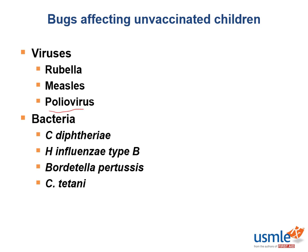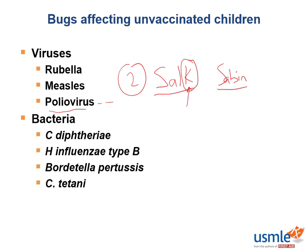What is the vaccine for poliovirus? Remember, there are two vaccines — the Salk and the Sabin vaccines. The Salk vaccine is the killed, or inactivated, vaccine, while the Sabin vaccine is the live attenuated vaccine. The Sabin vaccine provides better immunity, but since it's live and attenuated, it always has the possibility of reverting to an active virus and causing polio. Therefore, it is not used in the United States. Here in the US, we use the Salk killed vaccine for vaccination.